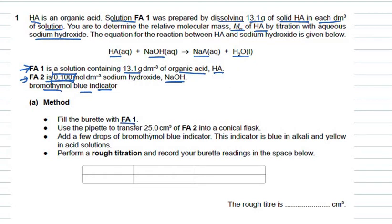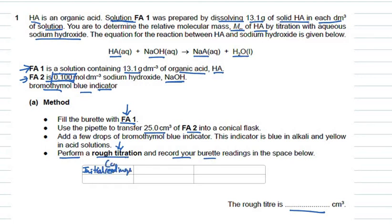The method says: fill the burette with FA1 and use the pipette to transfer 25 cm³ of FA2 into the conical flask. These practical steps are straightforward, but let's concentrate on tabulating your readings. The question says perform a rough titration and record your burette readings. You should draw a table to tabulate even your rough titration — do not write directly in the space given.